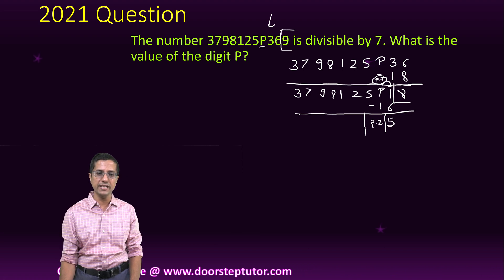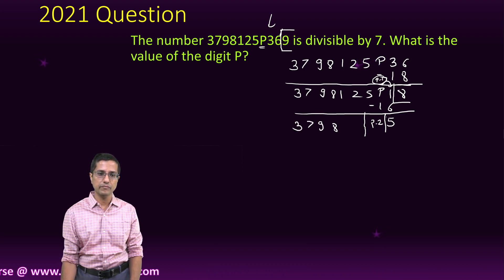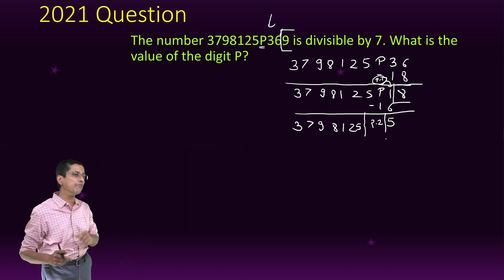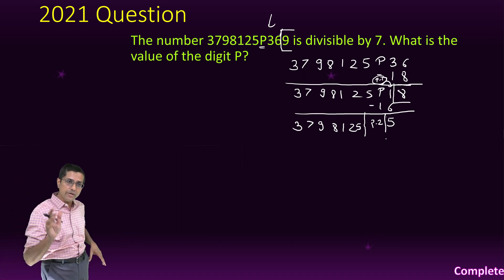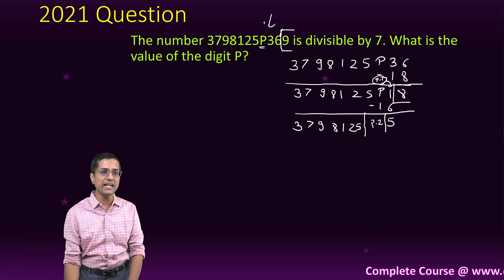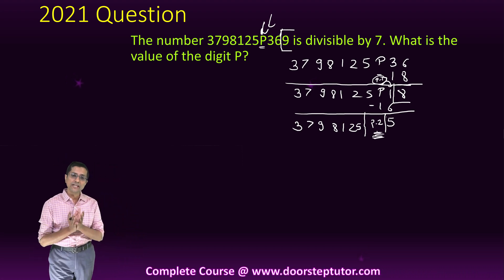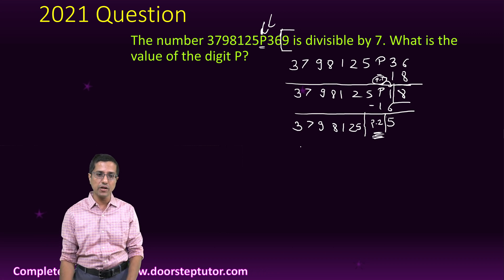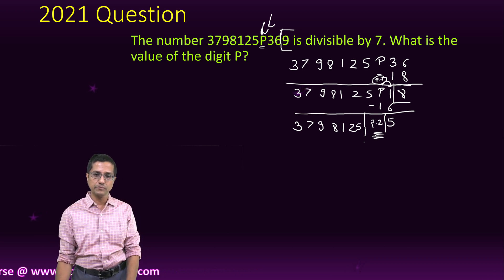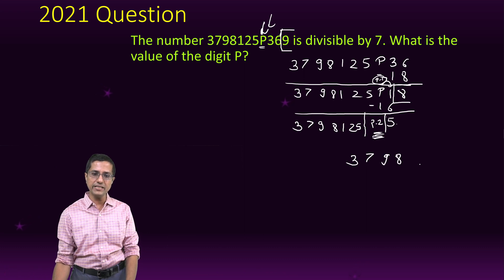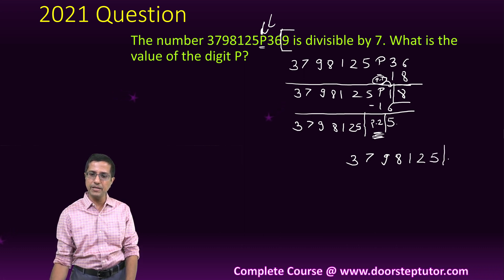So, this is p minus 2 as a single digit. The rest of the number will remain as is. I again apply the divisibility test and my object of applying the divisibility test again and again is to bring this digit p, the unknown digit to the last part, to the LSB so that it comes in the units place. That is my object.